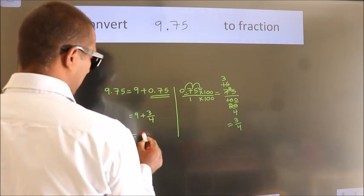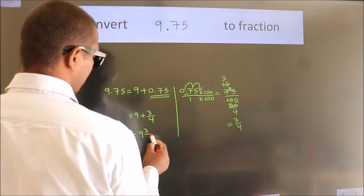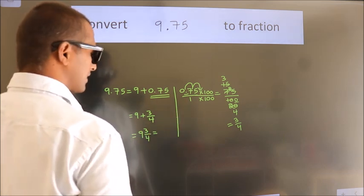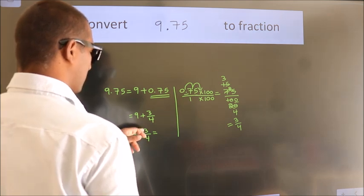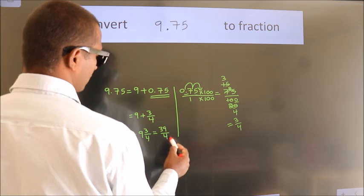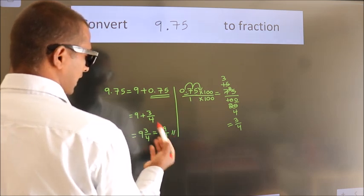In mixed fraction it is 9 and 3 over 4. And in improper fraction, it is 9 into 4, 36, plus 3. 39 by 4 is our fraction.